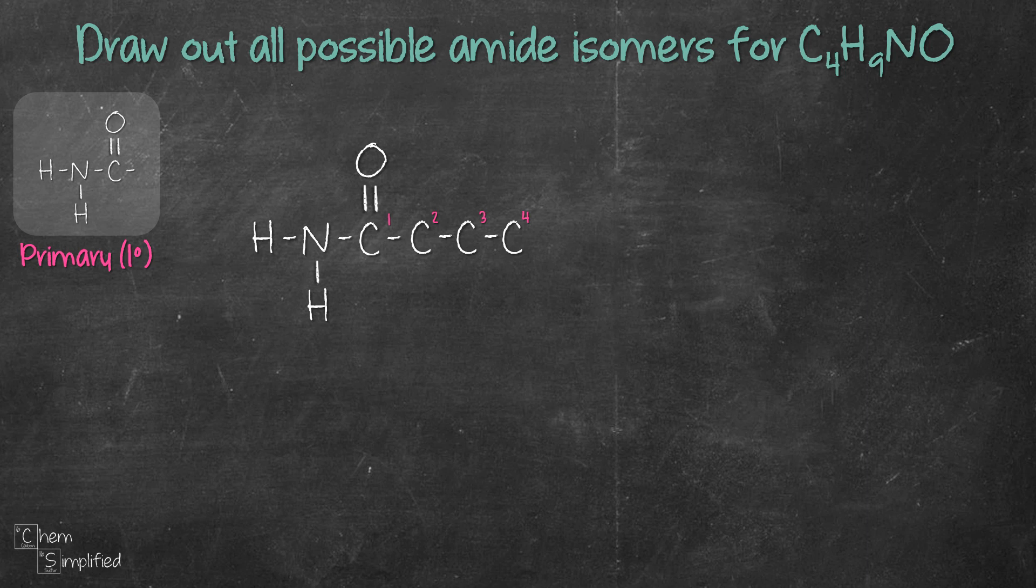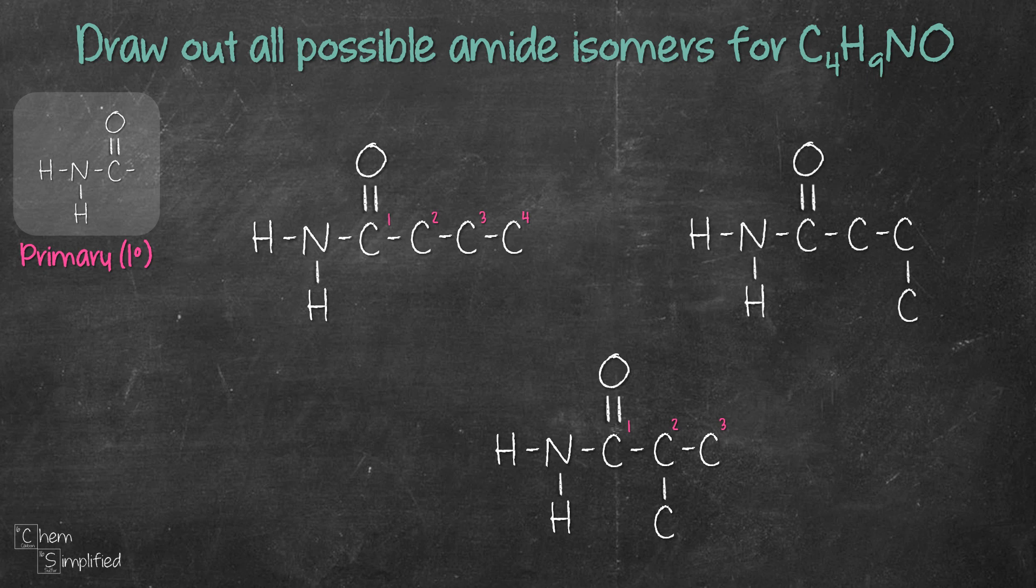We can also have the primary amide with a shorter carbon chain. Instead of connecting four carbons straight in a row, we can have a three carbon chain like this, and then we place the remaining carbon here. Notice that we don't place the extra carbon at the end of the chain like this. The reason we don't do that is because we'll end up with the same structure we've drawn. See, we ended up with a four carbon chain since we can count four carbons continuously.